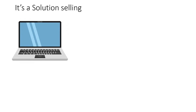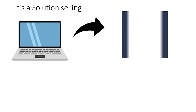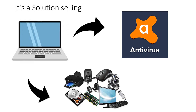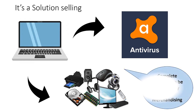Cross merchandising product placement is often described as selling a solution instead of just selling one product. For example, when you visit a retail electronics store like Croma and inquire about a laptop, the sales associate will also try to sell antivirus, extended warranty, Microsoft Office, and accessories like a hard disk, mouse, and keyboard. This is called providing a complete solution to the customer.